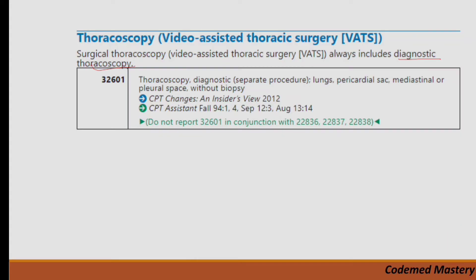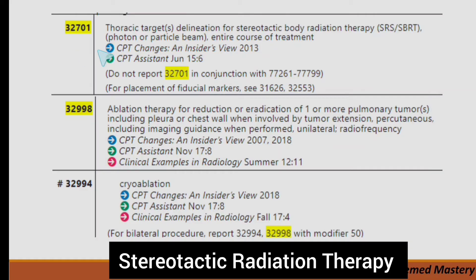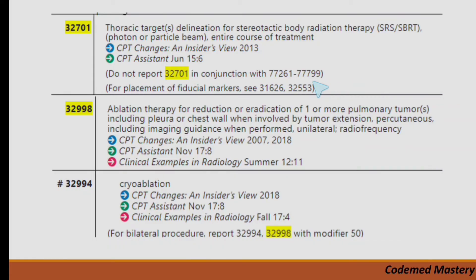There are codes for thoracoscopy with diagnostic biopsy starting at 32607. The VATS codes range from 32601 to 32674. Other important codes include 32701 for stereotactic body radiation therapy — thoracic target. Note the instruction: do not report 32701 with certain codes — highlight those. Also highlight 32998 for ablation therapy and 32994 for cryoablation. Familiarity with these codes will help you solve exam questions easily.